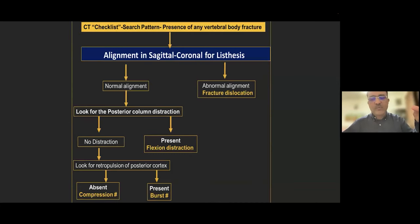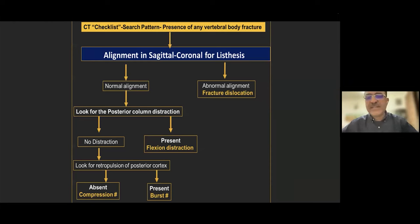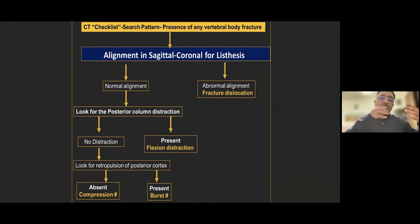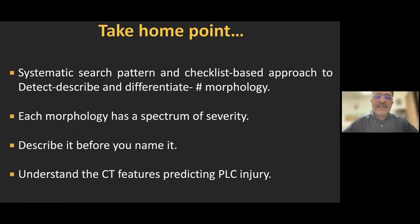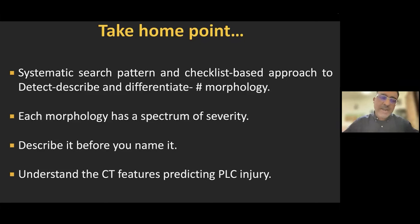At the end of your CT assessment: first look for alignment on sagittal, coronal, and axial planes — if malalignment is present, it is a type C fracture dislocation. If alignment is normal, look for posterior column distraction — if present, it is a type B fracture; decide whether B1 or B2. If no distraction, look for retropulsion or involvement of the posterior cortex — if present, it is burst (A3 or A4); if absent, it is A1 or A2. Take-home points: use a systematic search pattern and checklist-based approach to detect, describe, and differentiate fracture types. Each morphology is a spectrum of severity — describe well before naming. Understand which CT features predict PLC injuries, including kyphosis, vertebral body height loss, posterior neural arch fractures, and widening.